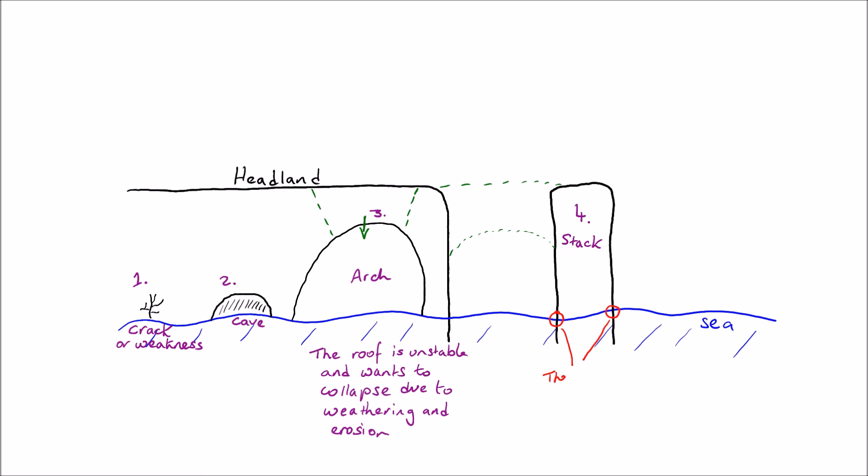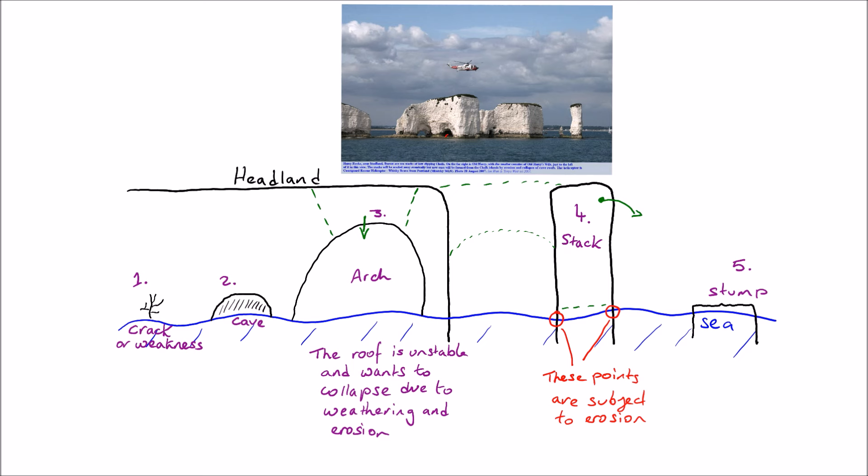The base of the stack is particularly prone to various types of erosion, such as hydraulic action and abrasion. And because of that, it weakens and it gets narrower. And eventually what can occur is a very large wave or during very large storm conditions, the stack can collapse. It can break off at surface level. We call the stack that's collapsed a stump.